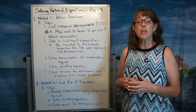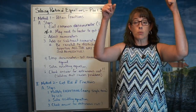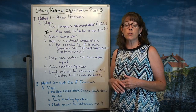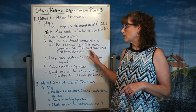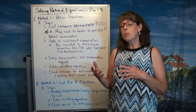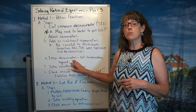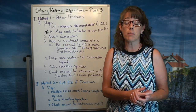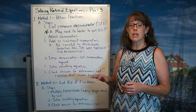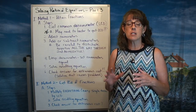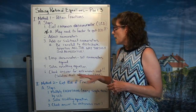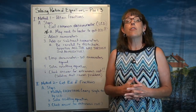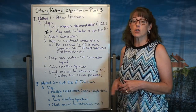Once we've found that LCD, we're going to adjust those numerators by multiplying numerator and denominator by what it takes to create the LCD. Then we're either going to add or subtract those numerators — being very careful that if we are subtracting, we need to distribute that negative all the way through that second numerator. We are going to drop those denominators and set the numerators equal to each other. It is possible that once we've adjusted the numerators, we can drop those denominators right away before distributing that negative, to prevent mistakes. Then we'll have an equation that's pretty easy to solve — we just need to be sure that we check our solution because it might be an extraneous root.